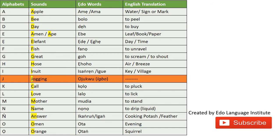Another I-sound word is 'IGWE,' which is the word for village. Now the J sound — this is highlighted because we don't particularly have words in EDO language that start with J, but we can pronounce the sound because we have other alphabets that sound similar.